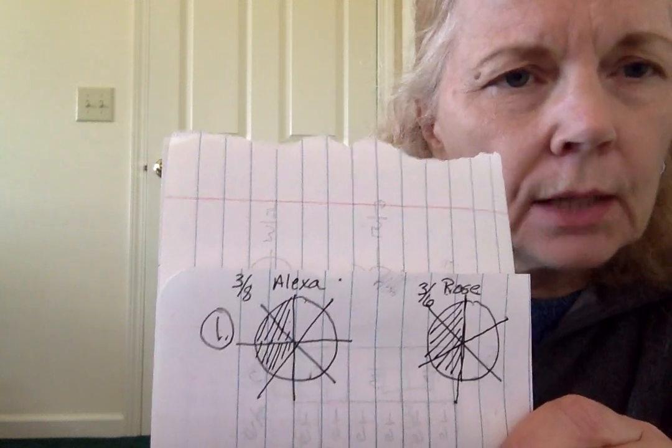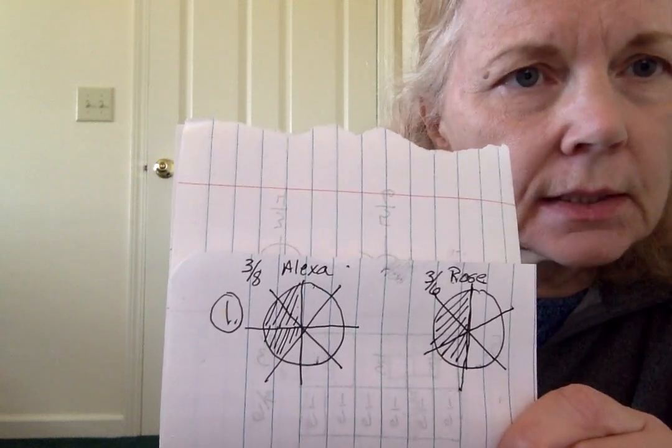So now we're going to look at what the question is asking us again. Write a fraction to describe what part of the book each girl read. Then tell who read more pages. Write the fraction for Alexa — she read three out of eight. Write the fraction for Rose — she read three out of six. And then tell me who read more pages, so write Alexa or Rose.